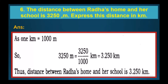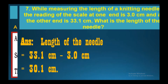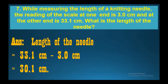While measuring the length of a knitting needle, the reading of the scale at one end is 3 centimeters and at the other end is 33.1 centimeters. What is the length of the needle? Length of the needle equals 33.1 centimeters minus 3 centimeters, which gives 30.1 centimeters.